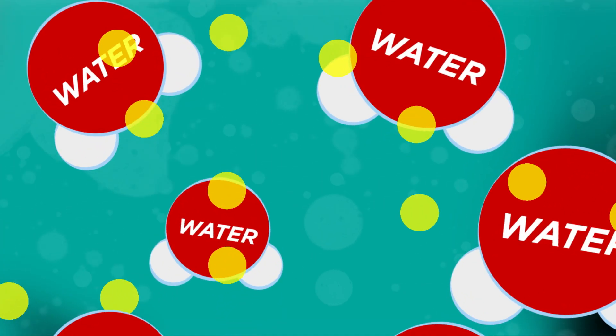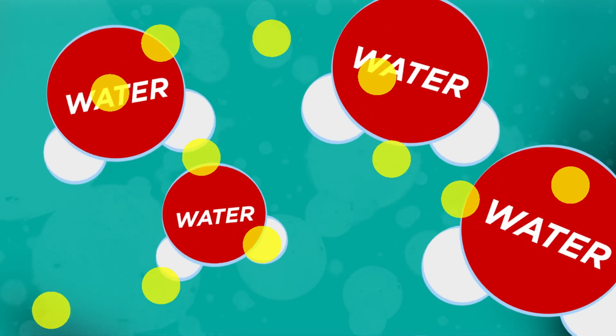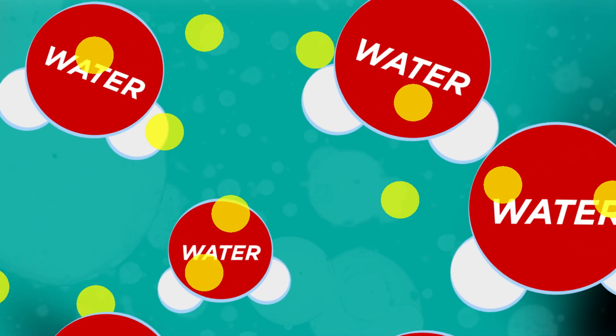Water conducts electricity. That's because electrons can flow by hitching a ride on atoms and molecules in the water.